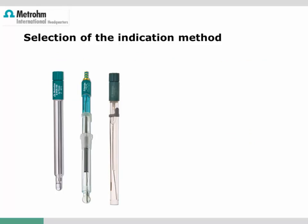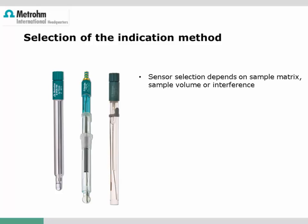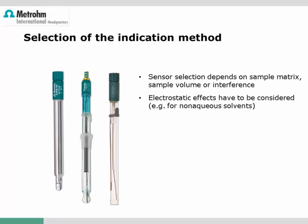Whatever potentiometric indication method is used, the choice of sensor is the most important decision to be made. The sensor selection depends on the sample matrix, the available volume of the sample solution, or any possible chemical interference. Electrostatic effects must also be considered — for example, when non-aqueous solvents are used, the sensor should have internal electrical shielding. The signal change during titration should be sufficient to enable a clear and reproducible endpoint evaluation; as a rule of thumb, the potential jump should be at least 70 mV.